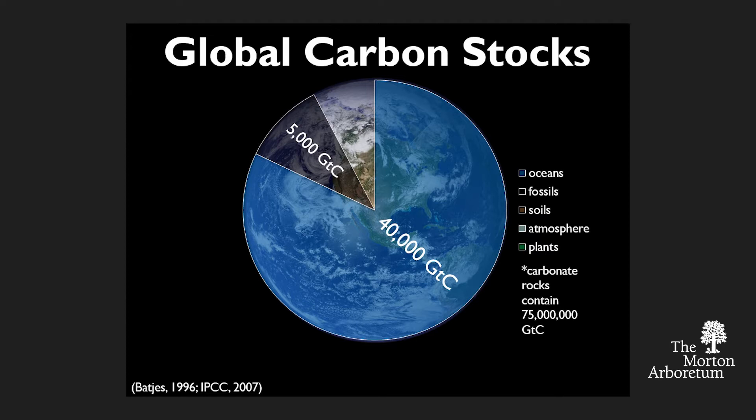The missing portion of global carbon stocks are these active pools: the soils, the atmosphere, and the plants and the trees. That's the carbon that's dynamic, actively cycling. And you can see the vast majority of that carbon, across most terrestrial systems, is found in soils.